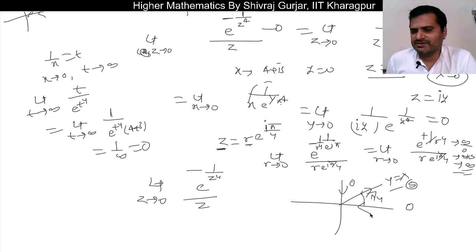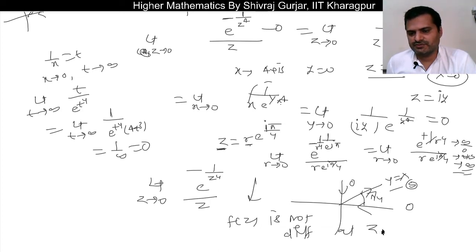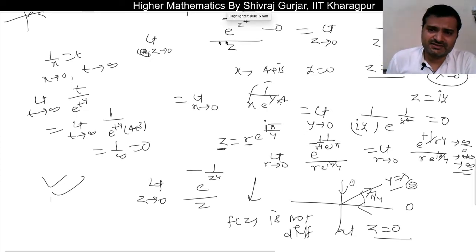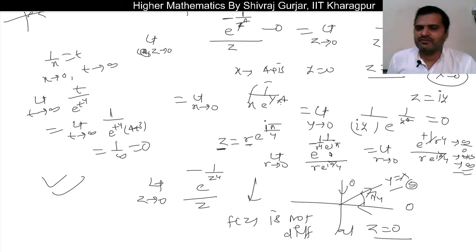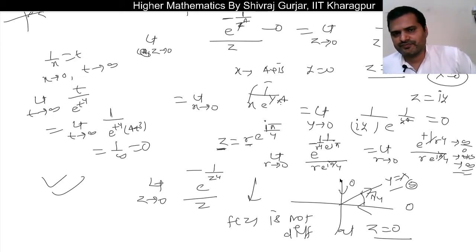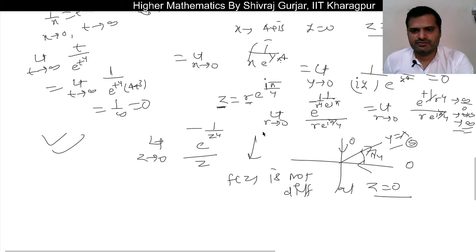So when approaching along the x-axis the limit is 0, along the y-axis the limit is 0, but when coming along the π/4 direction (y = x), the limit is infinite. The limit is not unique — it is not a definite value — so f(z) is not differentiable at z = 0. The key observation was that z⁴ in the denominator requires us to check directions that are multiples of π/4 or 3π/4.